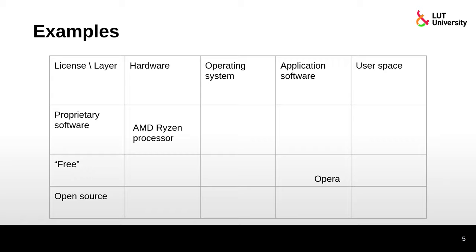For freeware application software, the Opera browser is a good example. In user space, a user doing something with software and producing output — such as creating email filters — could consider those filter settings as a piece of software. It is probably free if used personally, and can be shared as open source, though it needs some kind of license.